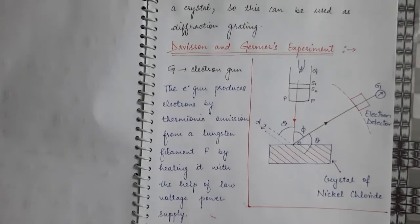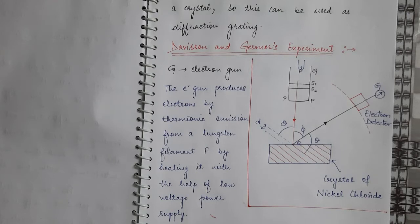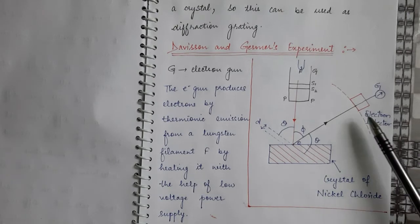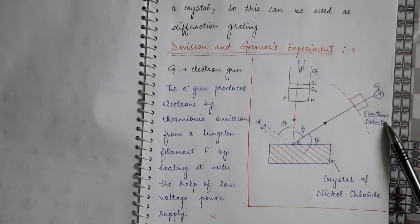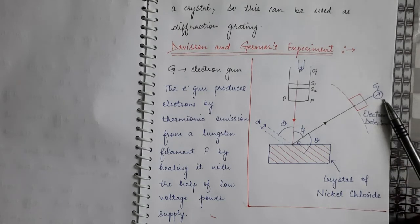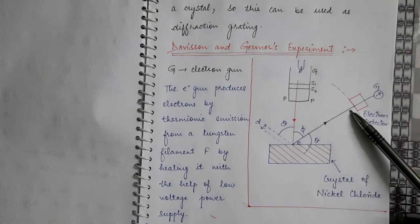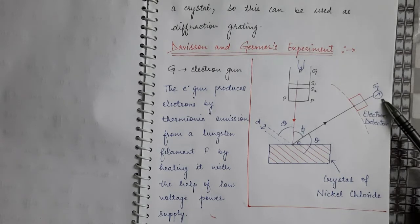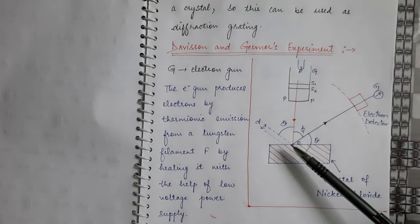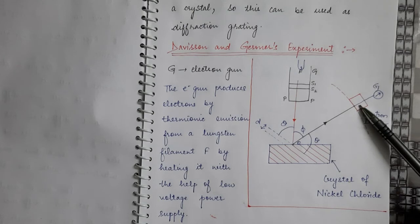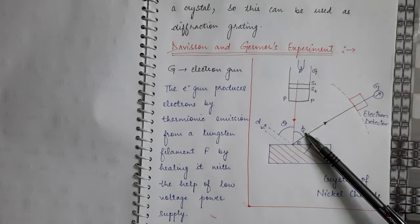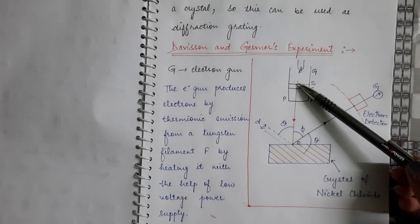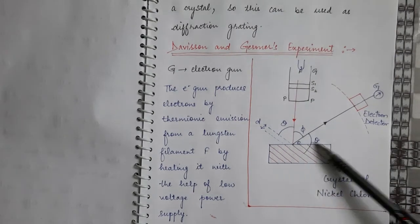The beam scatters through different angles, and upon scattering it is collected by the electron detector, which is connected to a galvanometer. The intensity of the scattered beam is measured from the deflection in the galvanometer — more deflection means more current, meaning higher intensity of the scattered beam at a particular scattering angle phi, which is the angle through which the incident electron beam is scattered by the atomic crystal.